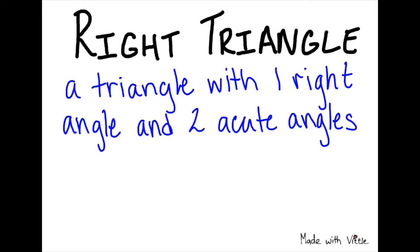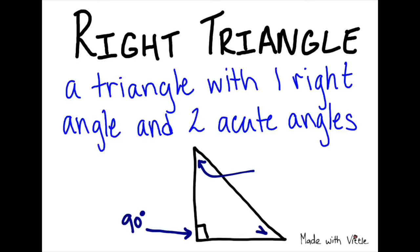The next type of triangle is a right triangle. This is a triangle with one right angle and two acute angles. Remember that a right angle measures exactly 90 degrees, and that our two acute angles will measure less than 90 degrees.